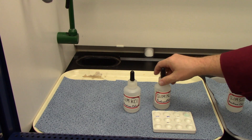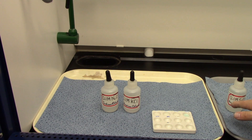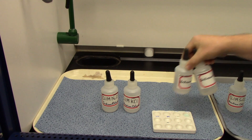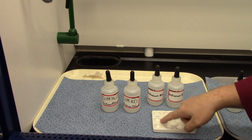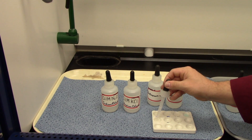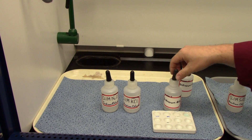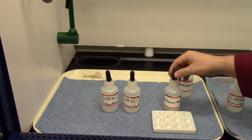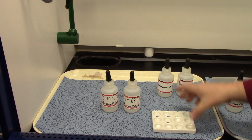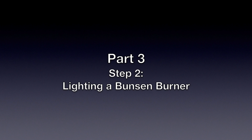Now we've got our known reagents into the proper wells. Next we're going to place the unknowns into the wells — the unknowns are clearly labeled unknown one and unknown two. The smart thing to do is to load your spot plate before doing the flame test. Don't turn your Bunsen burner on and then come over to get reagents — wait until you have all your reagents ready to go, then turn on your Bunsen burner. This is a fully loaded spot plate ready for the flame test.